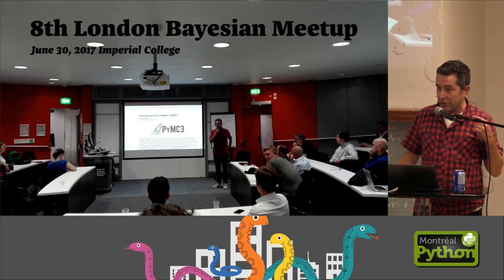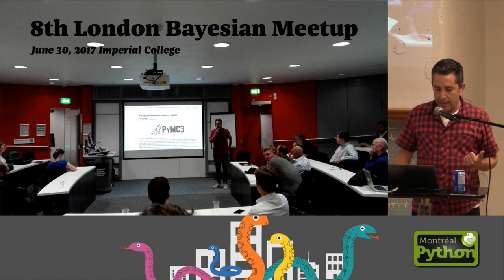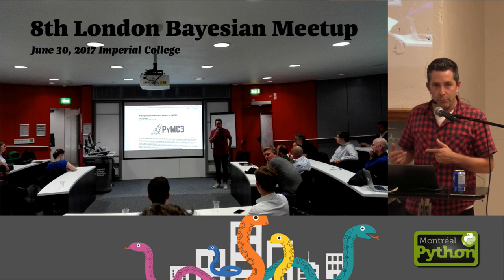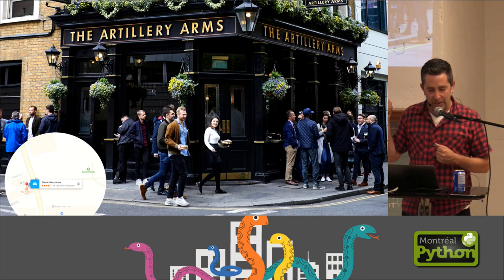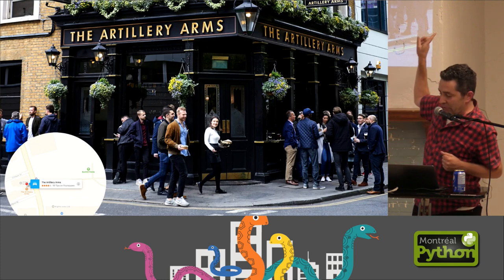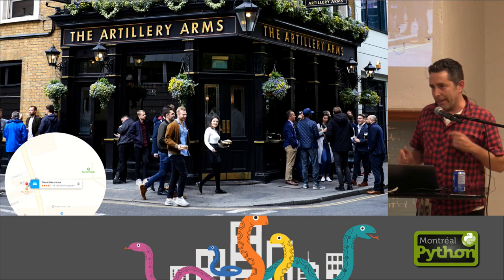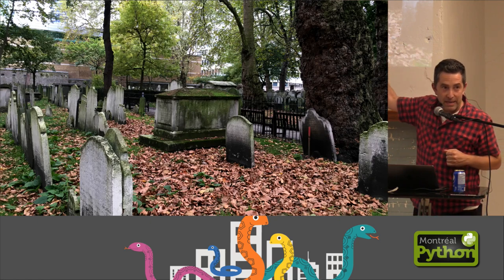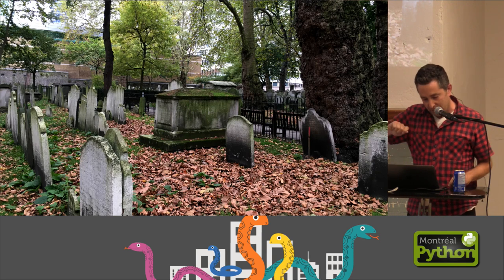So about this time last year, I did a different meetup in London. There's a Bayes meetup over there, which is really great. And much like this meetup, what you do afterwards is you go to the pub. There's a pub that you go to after the Bayes meetup in London called the Artillery Arms. Right across the street, if you look out this window, there's a cemetery called Bunhill Fields Cemetery. And just inside the gate and to your left, the big crypt that you see is Thomas Bayes. So you can sit there, give your talk about Bayesian statistics, and pour a little bit of beer on Bayes.